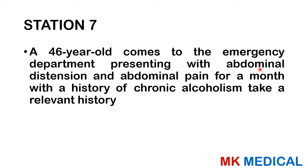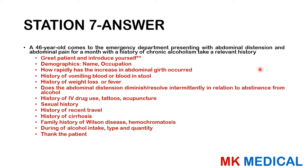Moving on to station seven: a 46-year-old comes to the emergency department presenting with abdominal distension and abdominal pain for a month with a history of chronic alcoholism — take a relevant history. Greet the patient, introduce yourself, gain consent. Get demographics — name, occupation. Ask how rapidly the increase in abdominal girth has occurred, any history of vomiting blood — is it painful or painless, how much, and how many episodes per day.